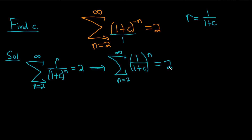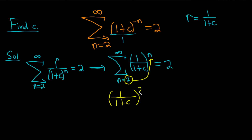It's equal to 2, so again that means it converges. Now we can use the formula for the sum of an infinite geometric series, which says you take whatever number is here and plug it in on top. So we have 1 over (1 + c) squared on top, and on the bottom it's always 1 minus r, so this is 1 minus 1 over (1 + c), and that's equal to 2.